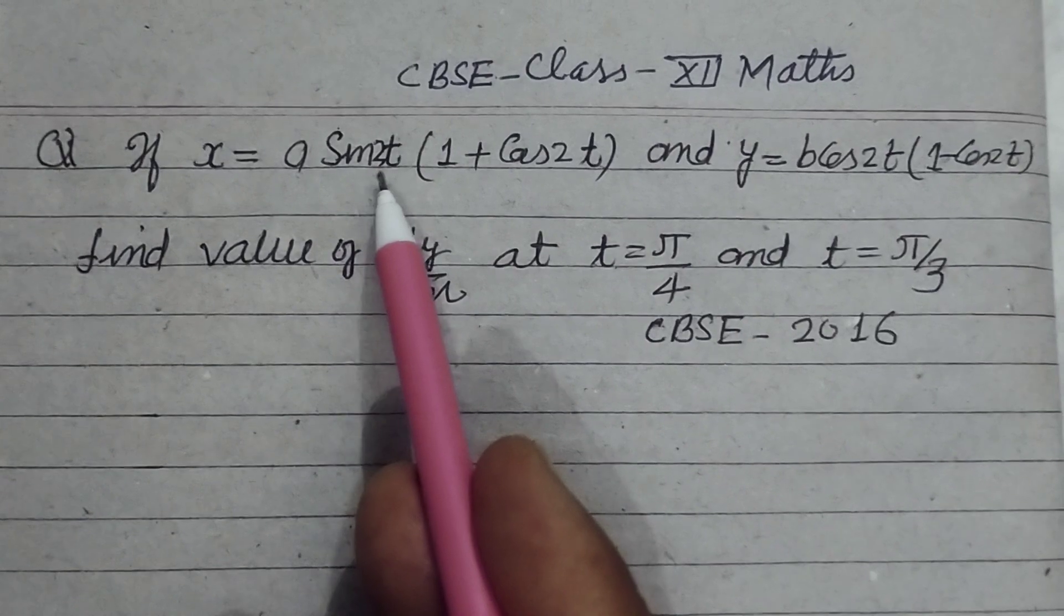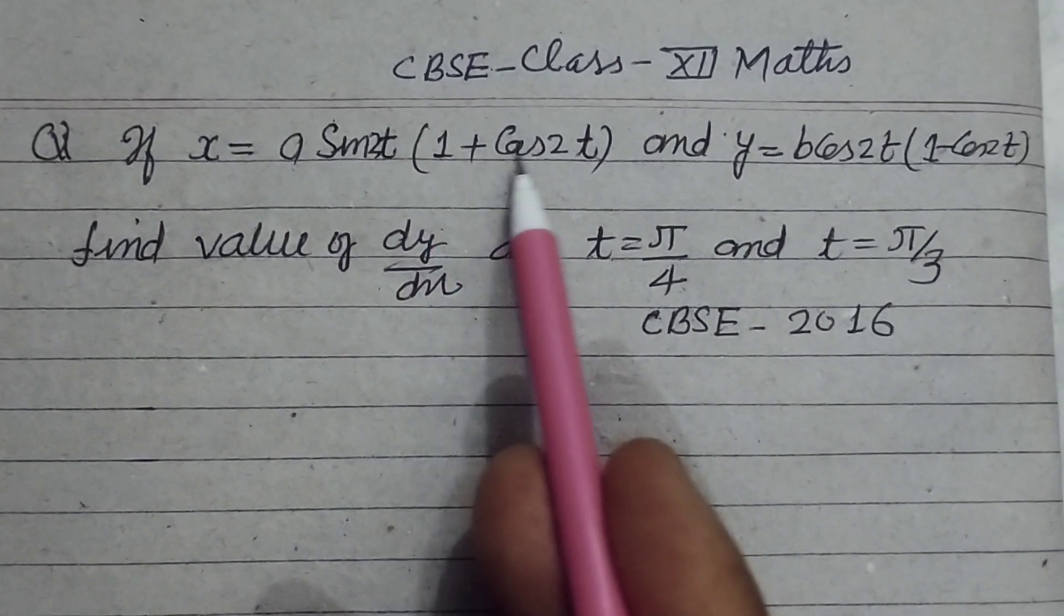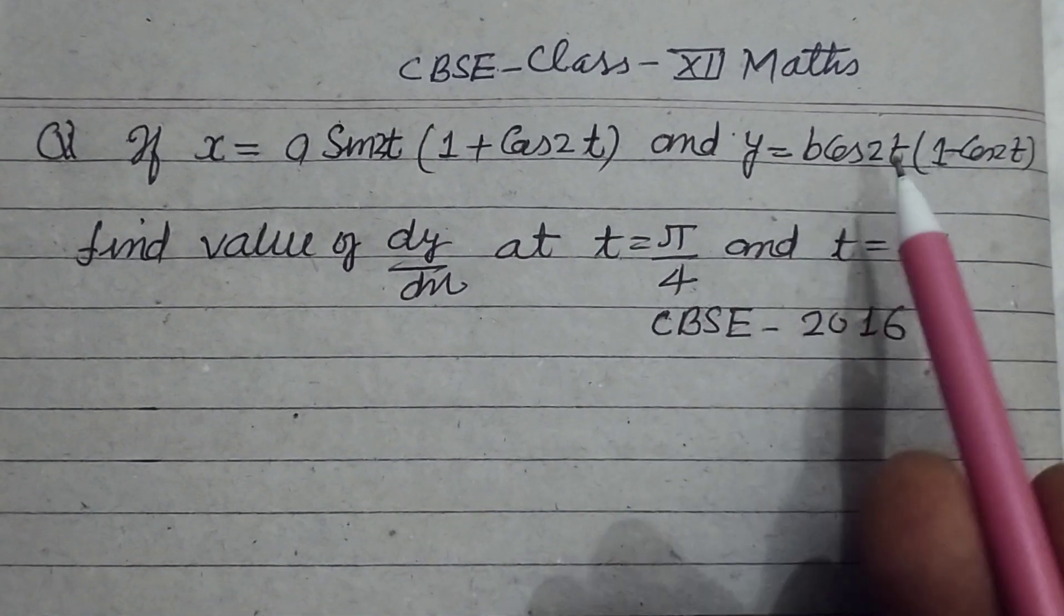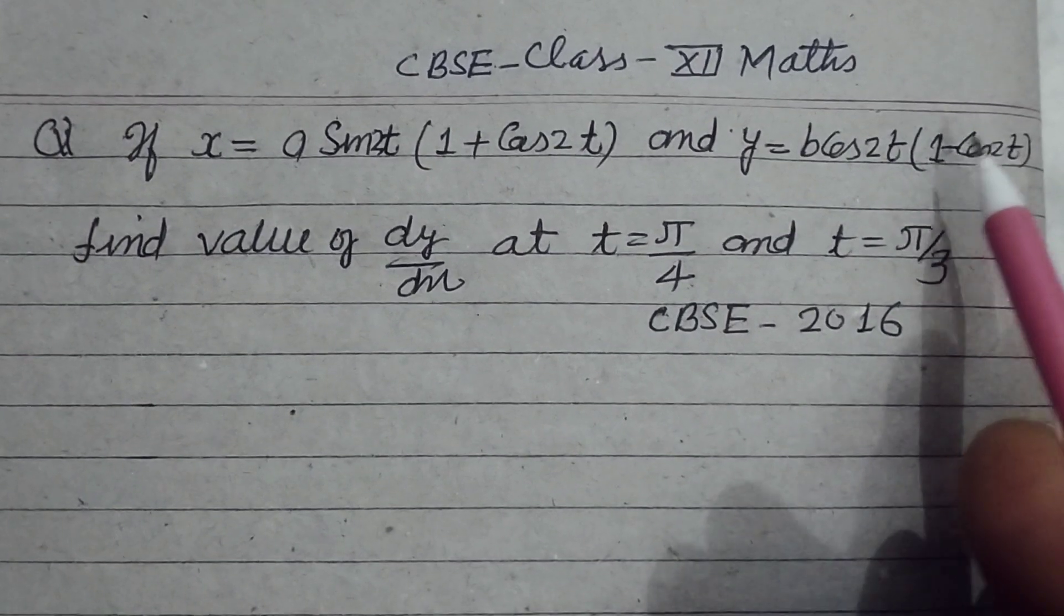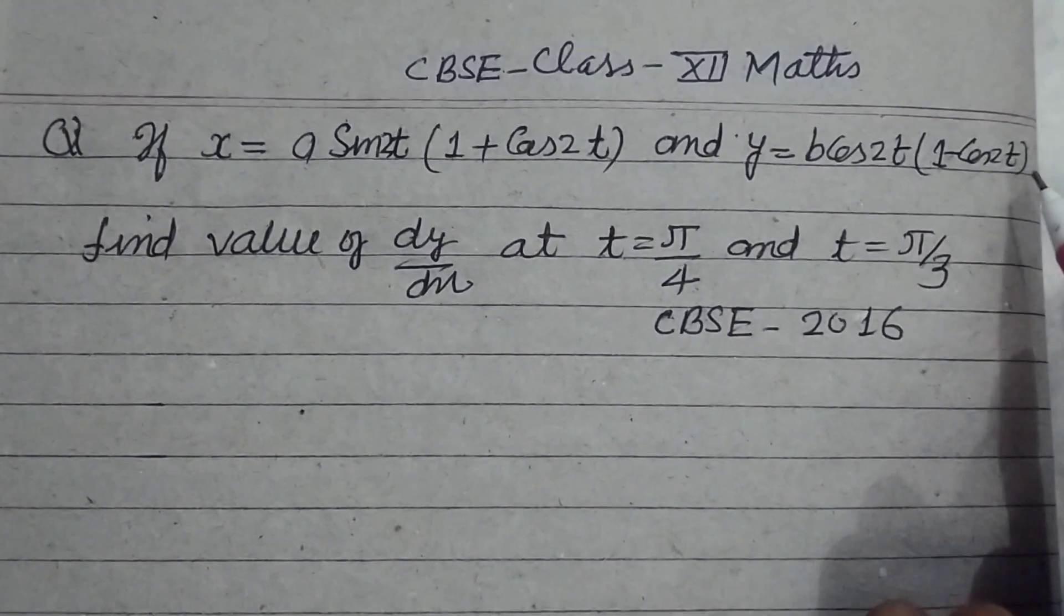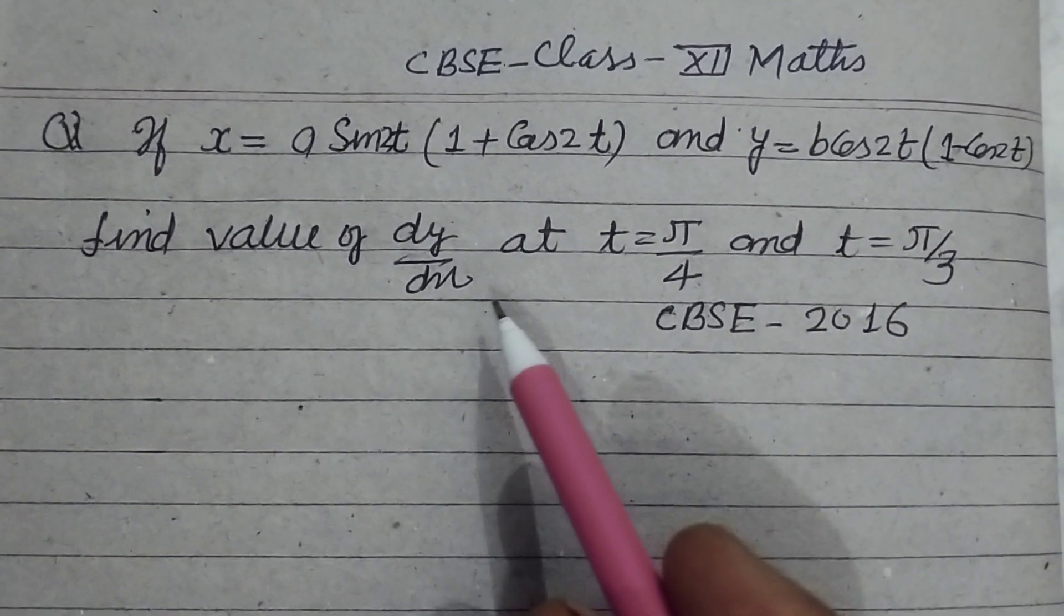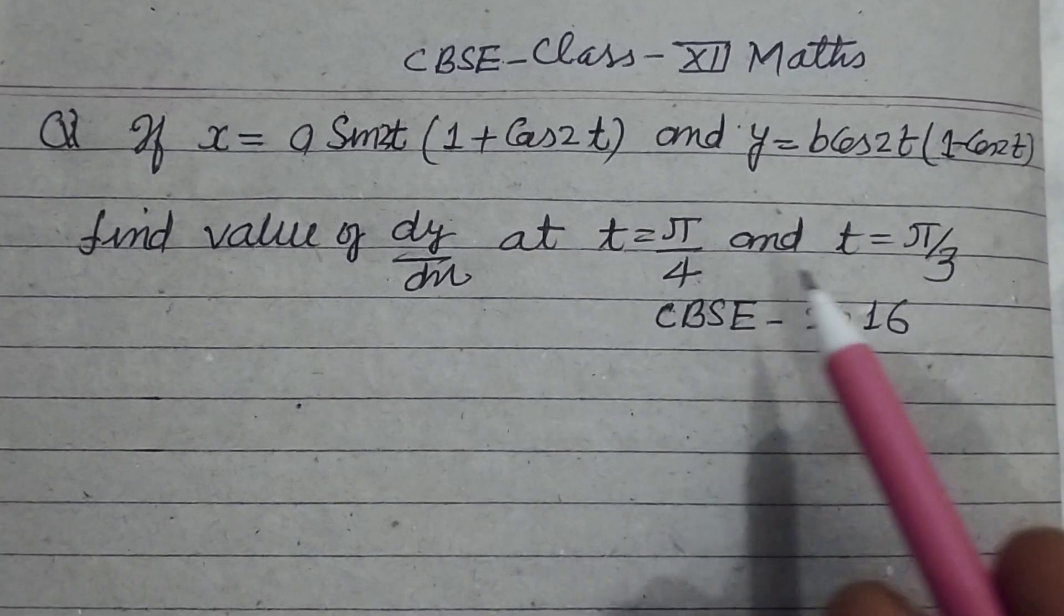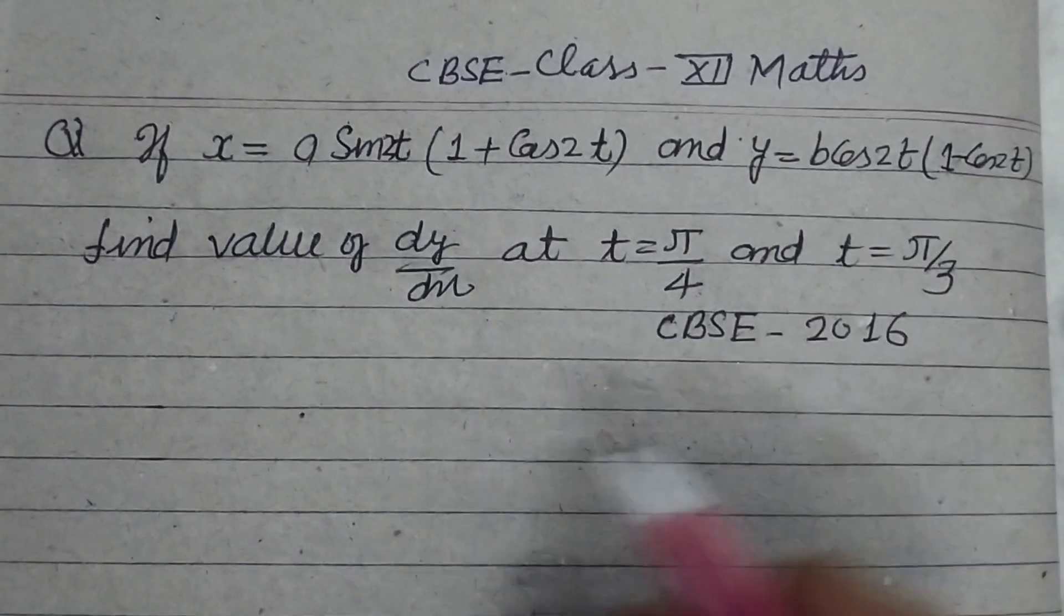If x equals a sin 2t times (1 + cos 2t) and y equals b cos 2t times (1 - cos 2t), then find the value of dy/dx at t = π/4 and t = π/3.